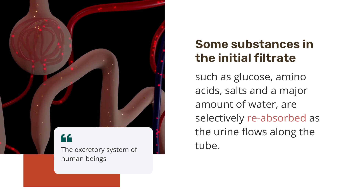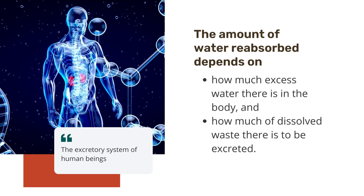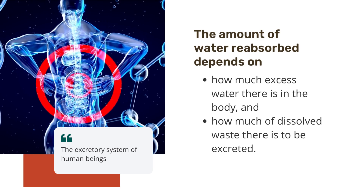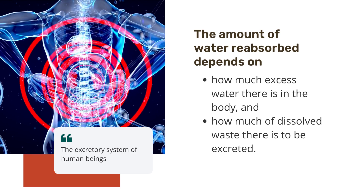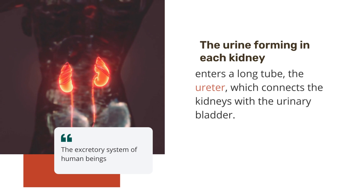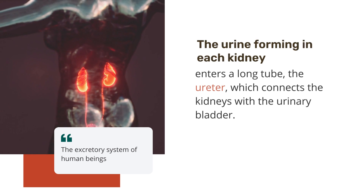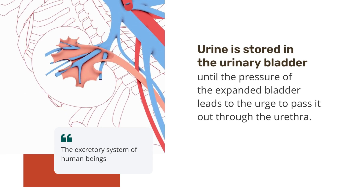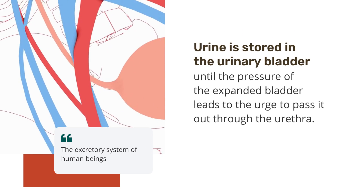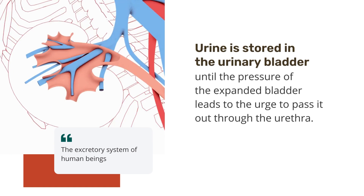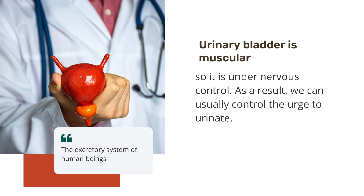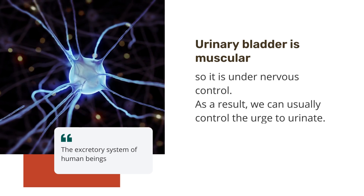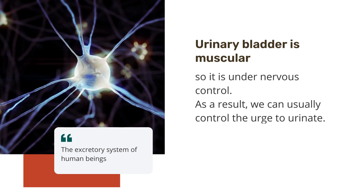How much water is reabsorbed depends on how much excess water there is in the body and on how much dissolved waste there is to be excreted. The urine forming in each kidney eventually enters a long tube, the ureter, which connects the kidneys with the urinary bladder. Urine is stored in the urinary bladder until the pressure of the expanded bladder leads to the urge to pass it out through the urethra. The bladder is muscular, so it is under nervous control. As a result, we can usually control the urge to urinate.